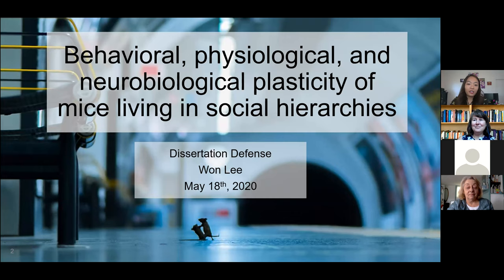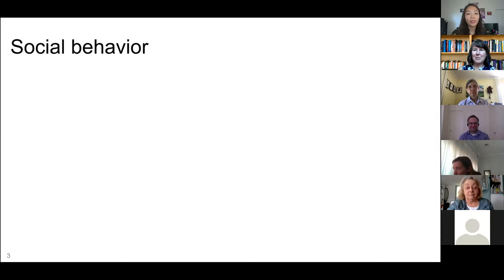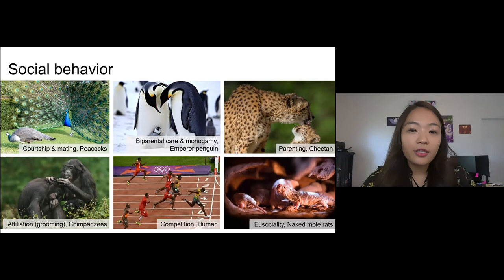Today I'm here to talk about my dissertation work, which is on behavioral, physiological, and neurobiological plasticity of mice living in social hierarchies. I wanted to start with a big picture: talking about social behavior in general. Social behavior is broadly defined as the communication between two conspecifics — it could be human or any social animal — that has high potential to change subsequent behavior. It is found across species in different forms such as mating, parenting, affiliation, competition, and even asociality.